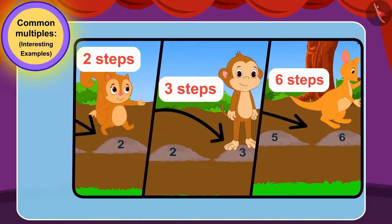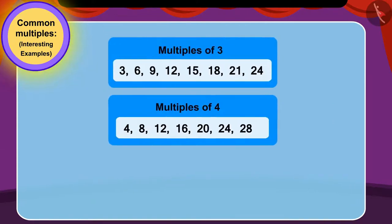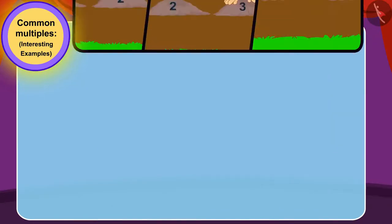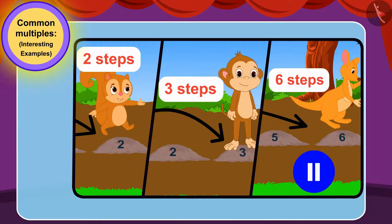Children, if all three friends had jumped to multiples of 2, 3 and 6 instead of multiples of 3, 4 and 6, would the three friends have crossed the marsh successfully? If you want, you can stop the video and find the answer.